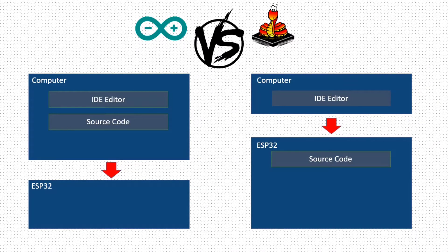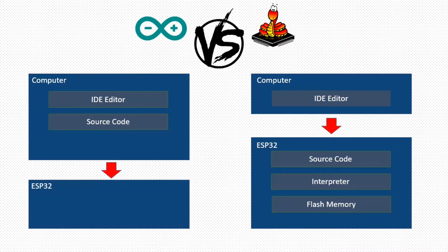In MicroPython, the source code compilation happens inside the microcontroller. The Python interpreter converts the source code into bytecode and stores it in the random access memory, and consequently executes the program, which all happens at runtime.